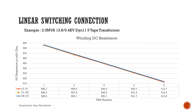For DC winding resistance, we have an example: a 42.5 MVA transformer, 13.8 over 0.4 kV, with vector group DYN11 and 5 taps. The DC winding resistance is as shown in the curve. Tap number 1 has the highest value and tap number 5 has the lowest value.